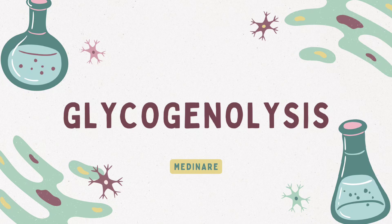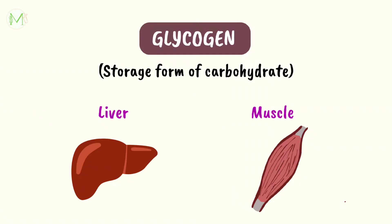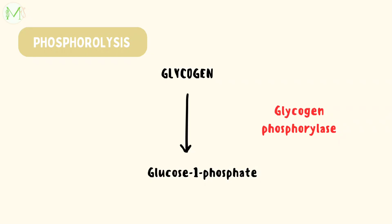Welcome back to Medinet. In this video, let's discuss Glycogenolysis. In the previous video, we learnt about the process of glycogen formation. We know excess blood glucose gets converted to glycogen and stored in liver and muscle. But when we starve, the blood glucose level reduces, making those stored glycogen get back to the required form, which is glucose.